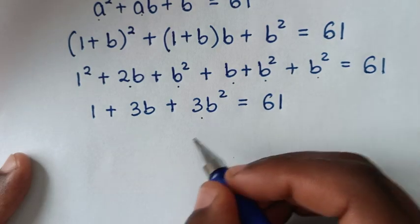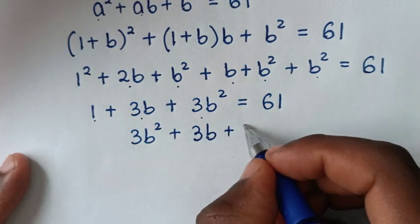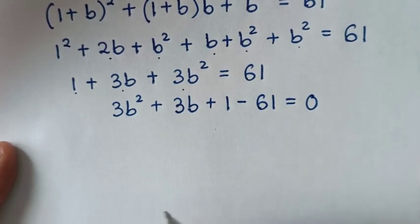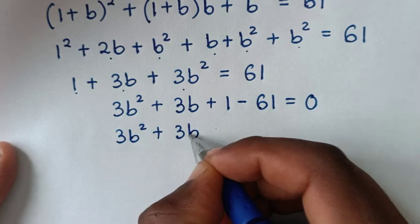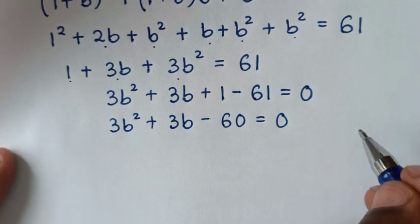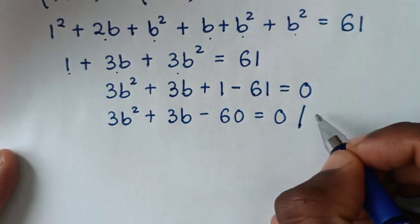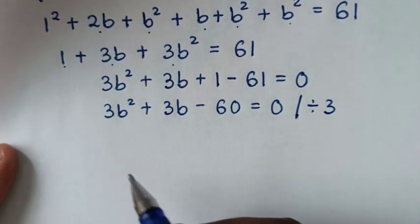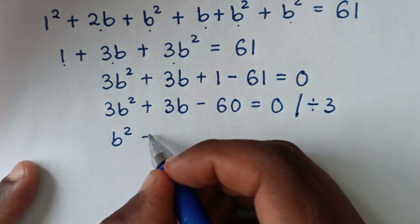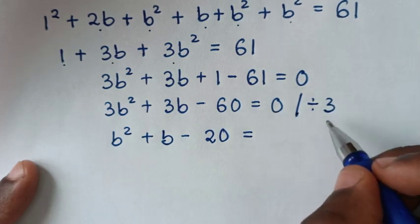Then, in the next step, 1 square is 1, then 2b + b gives 3b, then b² + b² + b² gives 3b², so we have 3b² + 3b + 1 = 61. Taking 61 to the left side gives 3b² + 3b - 60 = 0. This quadratic equation is divisible by 3 in every part, so dividing the whole equation by 3 gives b² + b - 20 = 0.